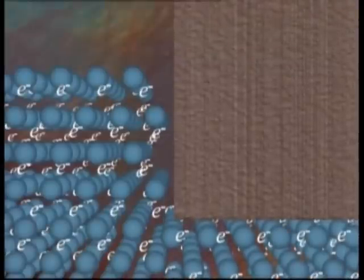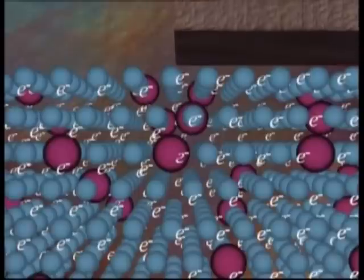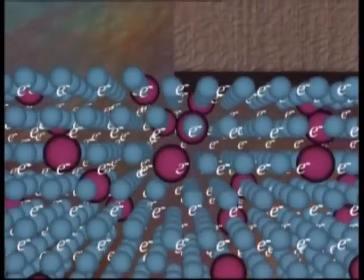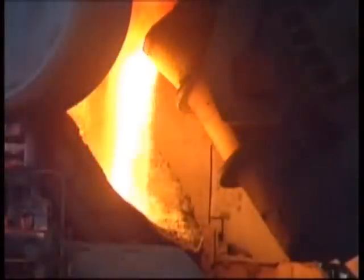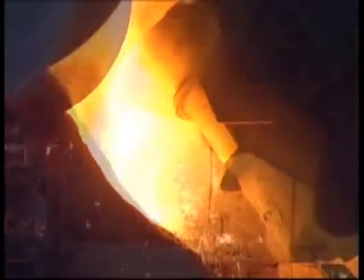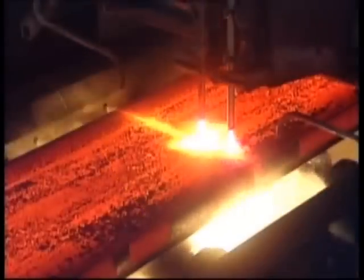To prevent the atoms moving as easily, different sized atoms can be added to hold the layers in place. This way, iron can be strengthened by adding carbon to produce steel.